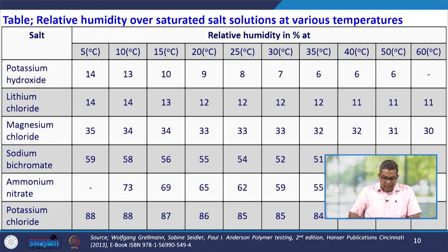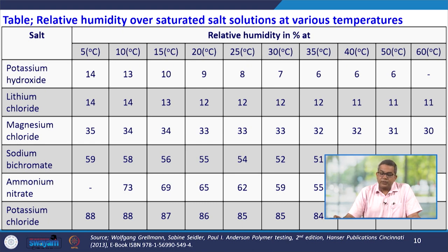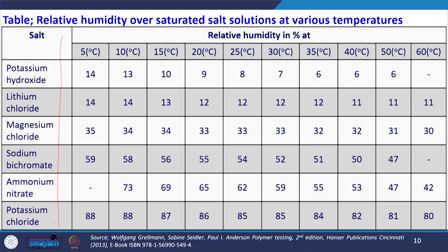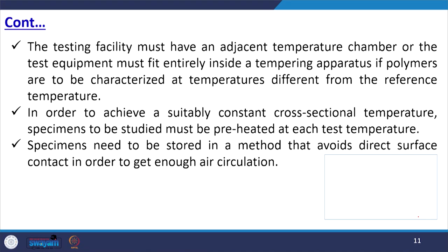In this particular table, we have the relative humidity over saturated salt solutions at various temperatures. The salts used include potassium hydroxide, lithium chloride, magnesium chloride, sodium bicarbonate, ammonium nitrate, and potassium chloride. The relative humidity in percent is given at temperatures from 5 degrees Celsius up to 60 degrees Celsius, and you can see the variation in relative humidity conditions.